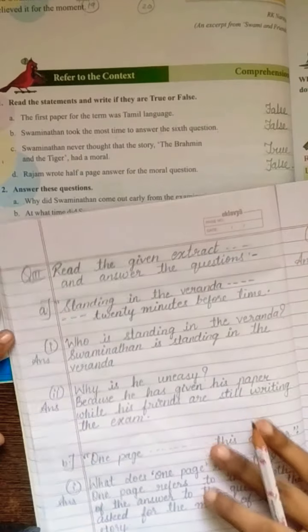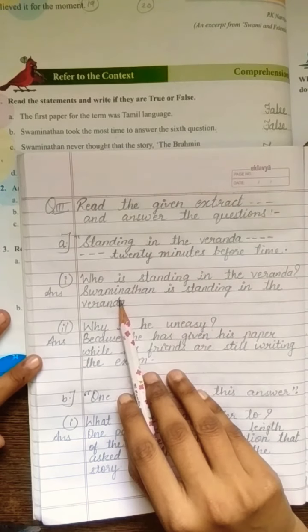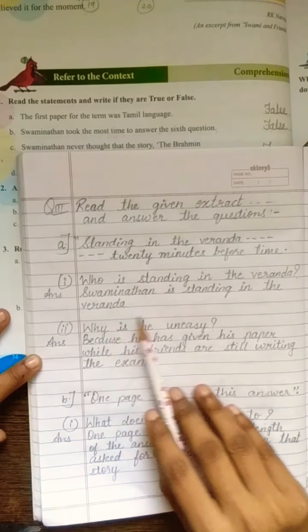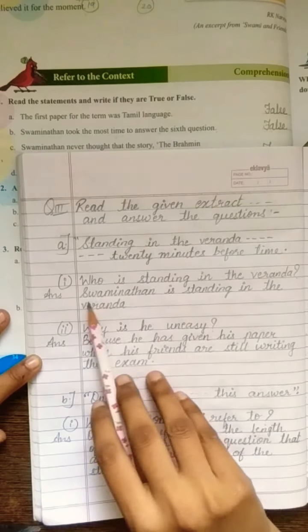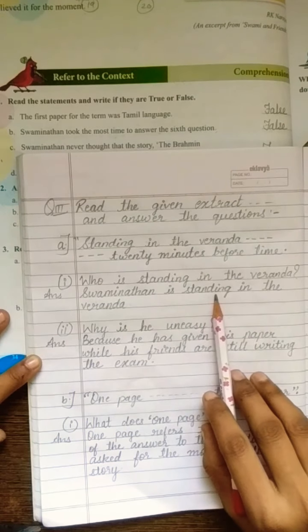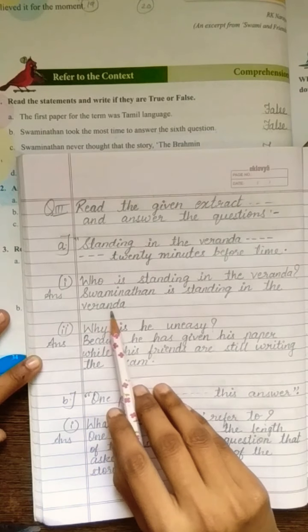Now the question is, who is standing in the veranda? So, let's write the answer. Who is standing in the veranda? Swaminathan kaun khada tha? Swaminathan is standing in the veranda. Repeat. Swaminathan is standing in the veranda.